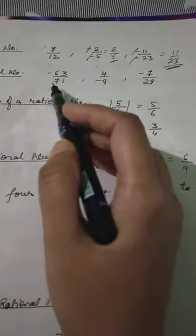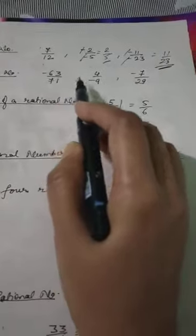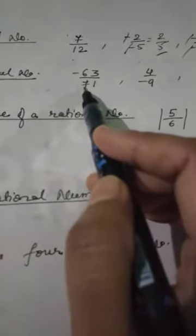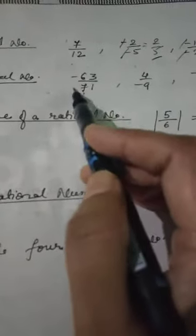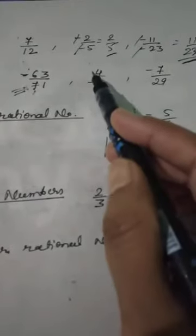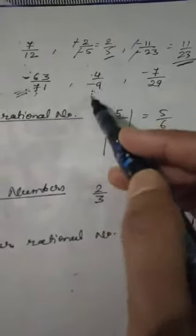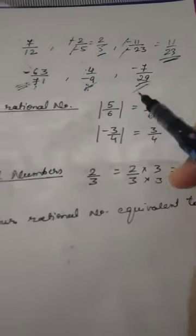What are negative rational numbers? A rational number is said to be negative if its numerator and denominator have opposite signs. For example, if the denominator is positive and the numerator is negative — opposite signs — it is a negative rational number. Similarly, positive numerator with negative denominator is also a negative rational number.